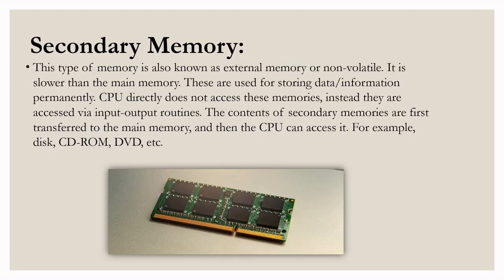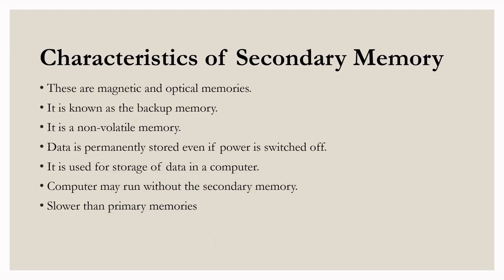Hello everyone, Aditya here. Today I will be explaining the topic of secondary memory. This type of memory is also known as external memory or non-volatile memory. It is slower than the main memory and is used for storing data or information permanently. The CPU does not directly access this memory; instead, they are accessed via input-output routines. The contents of secondary memory are first transferred to the main memory and then the CPU can access it. Examples include disk, CD-ROM, DVD, etc. These are also known as external or auxiliary memory.